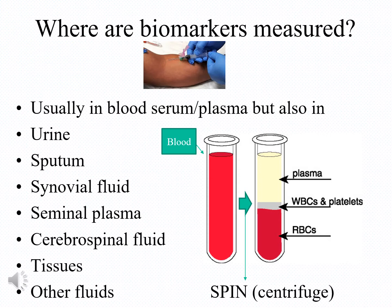On the right side of the slide, it is shown how we obtain serum or plasma from whole blood. After venopuncture, the tube of blood is usually spun at around 3,000 g for about 15 minutes, after which time the tube has three layers: the red blood cells on the bottom, the white blood cells at the interface, and a clear yellow fluid on top, which is called serum if no anticoagulant is used, or plasma if we use an anticoagulant like heparin in the tube.